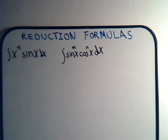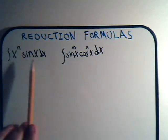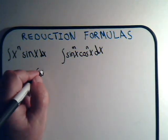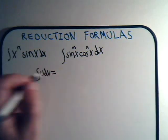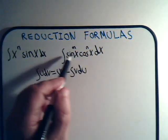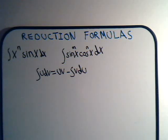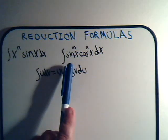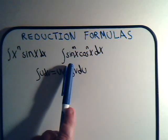In the last video we derived a reduction formula for a general type of integral, and it was pretty straightforward. We just used integration by parts, applied the formula twice, and got our answer. Now what we want to do is derive a reduction formula for this kind of integral. This is going to be more complicated. We'll spend this video and probably one after discussing and deriving this reduction formula, which becomes important later when we're dealing with beta integral functions.